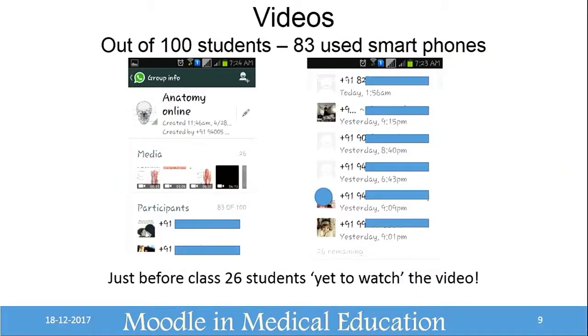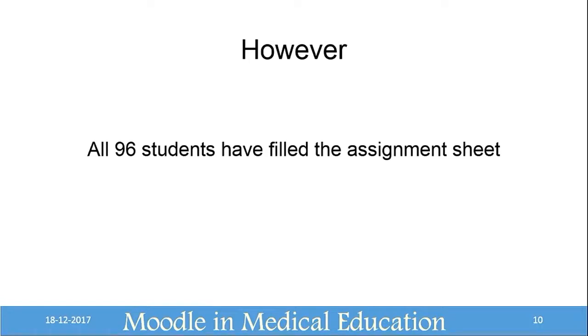Out of 100 students in the class, 83 used smartphones; the rest viewed via Blogspot. But just before the class — this screenshot was taken just before the class — you can still see that 26 students had not watched the video. They had not downloaded it, not seen the post, nothing. Yet they still came to class. We asked everybody to fill a worksheet, and all 96 students filled it. This proved students are smarter than we think — they might have copied answers from others, or just filled in random words.